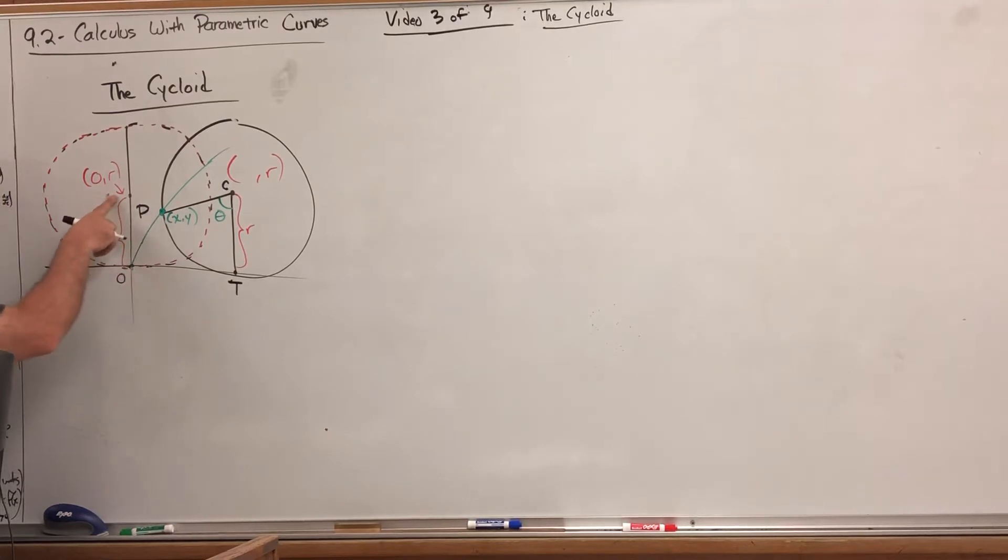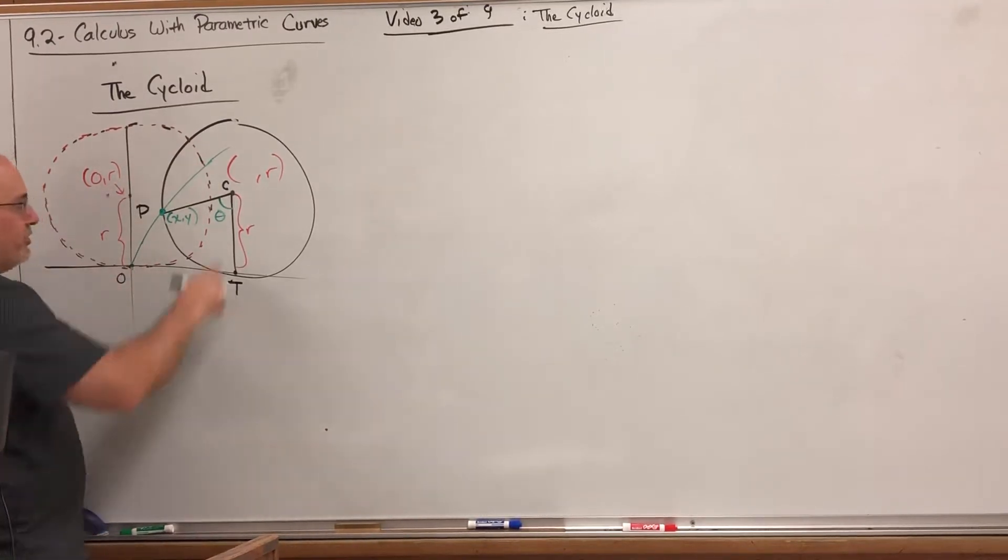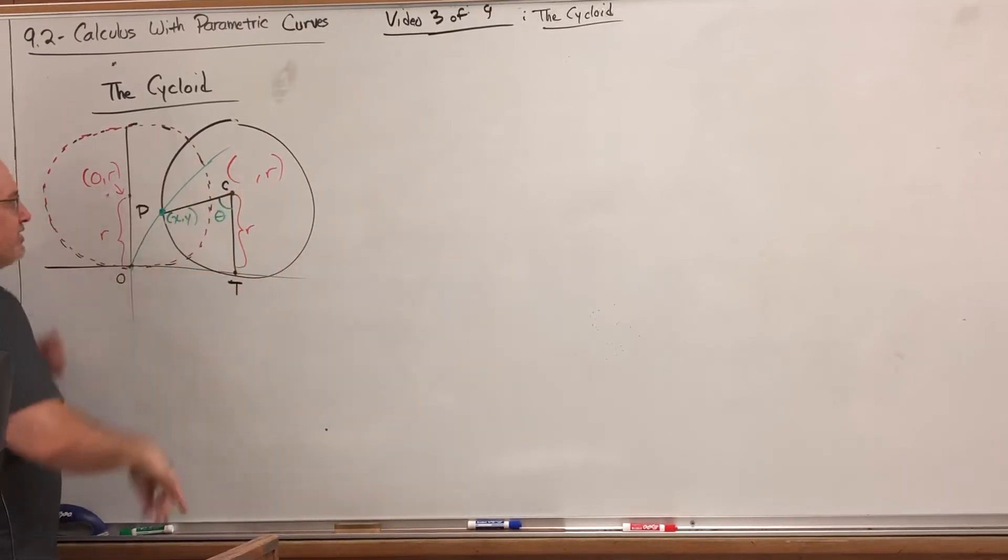So what I've drawn here is this dotted red and black circle where the original circle started tangent to the x-axis at the origin with its center at zero comma r. Then we've rotated a little bit so its center is over here, still up r because the circle is still sitting on the x-axis.